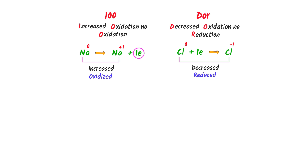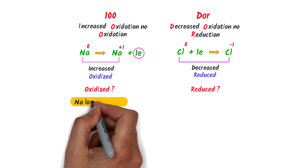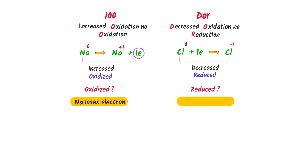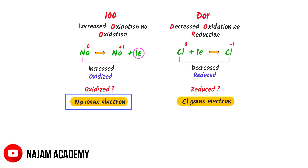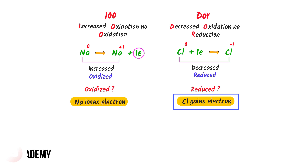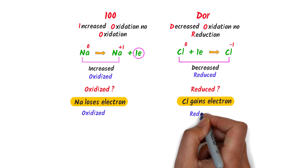Now, how is sodium oxidized and chlorine reduced? The answer is simple — it is due to the availability of two opposite species. Sodium loves to lose electrons and chlorine loves to gain electrons. So due to their opposite nature, sodium loses electrons and gets oxidized, while chlorine gains electrons and gets reduced.